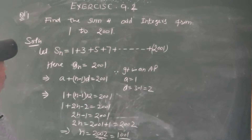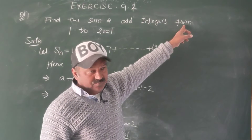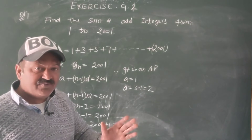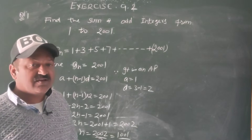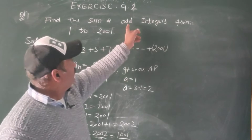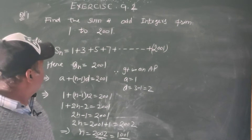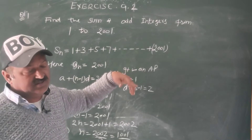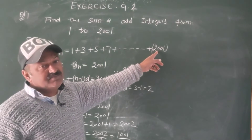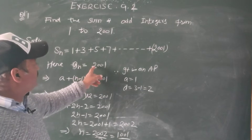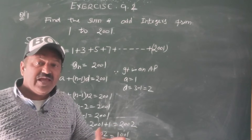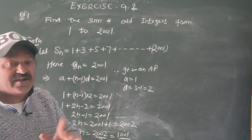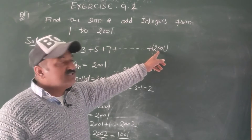Question number 1, Exercise 9.2: Find the sum of odd integers from 1 to 201, because 1 and 201 are both odd, so we include both. Let SN equal 1 plus 3 plus 5 plus 7 plus ... plus 201. These are the odd integers from 1 to 201. First of all, we have to find the value of N, since AN equals 201, and without N we cannot find the sum.